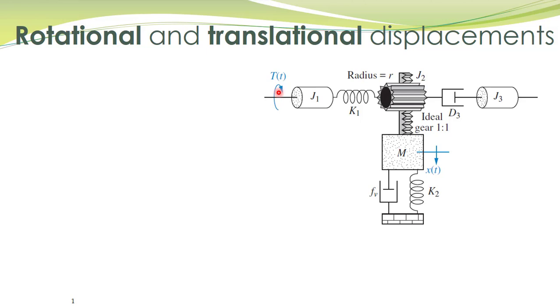We want to obtain a transfer function between the displacement of this mass and the applied torque. The procedure we already know: the first step is to determine linearly independent displacements. So when this torque is applied to this shaft,